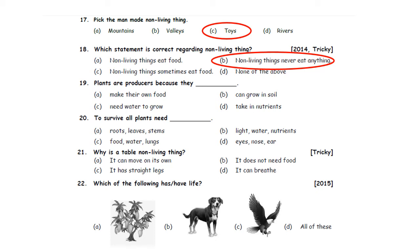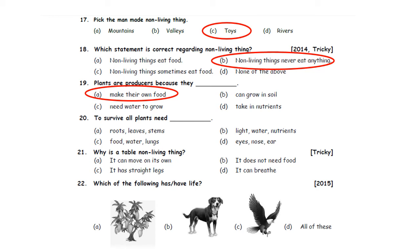Nineteenth: Plants are producers because they make their own food. Option B: can grow in soil. Option C: need water to grow. Option D: take in nutrients. All living things depend on plants for their food. Plants are producers because they can make their own food. So, Option A is the correct answer.